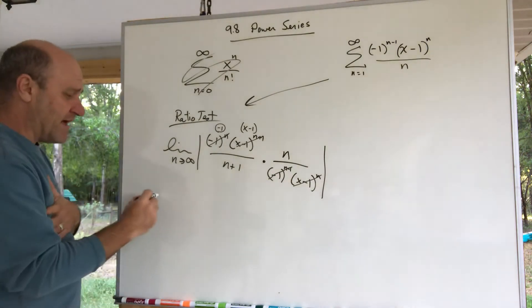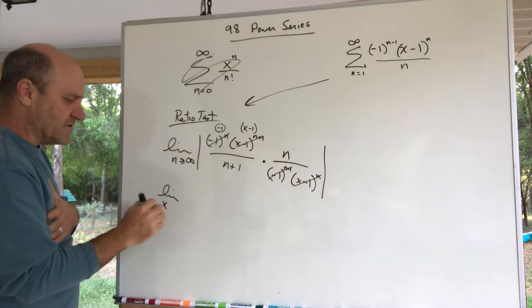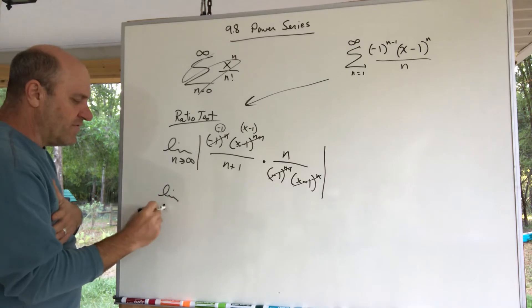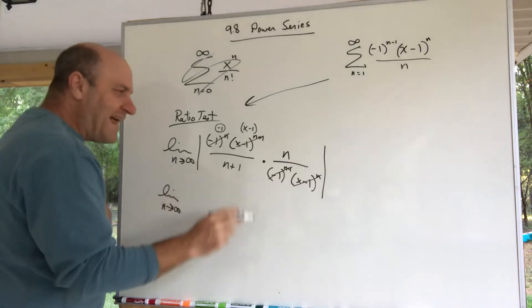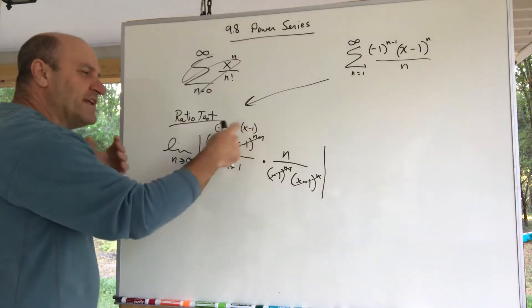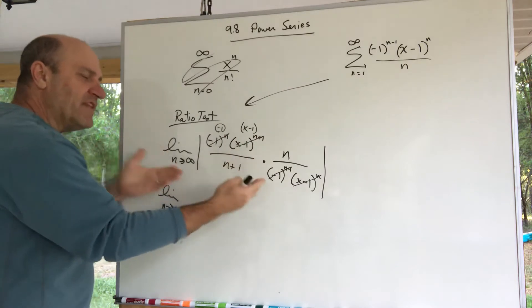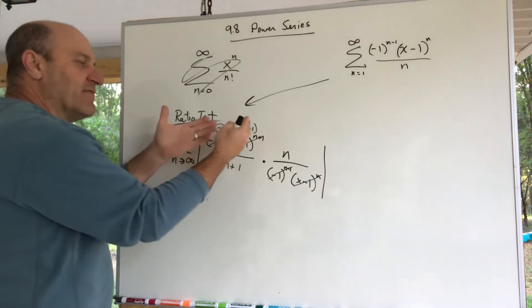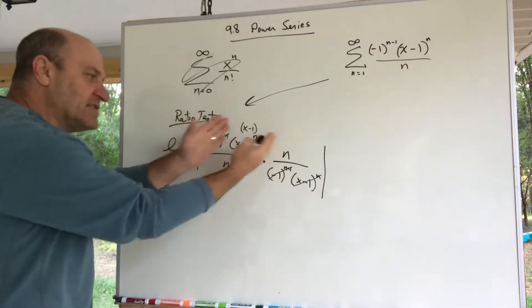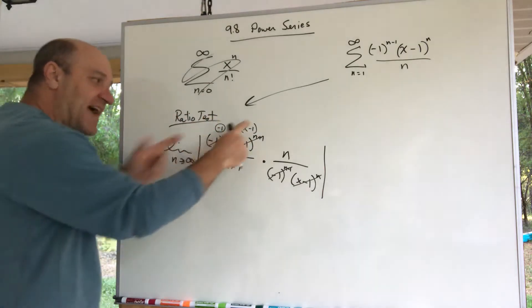Let's see what I have here. I have the limit as n goes to infinity. What I like to do is pull the x minus 1—it's the variable of the limit is n—I like to take the x and treat it like a constant, pull it out of the limit. Of course it's got absolute value on it.